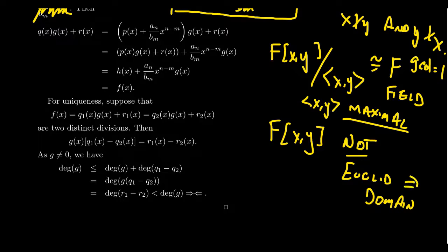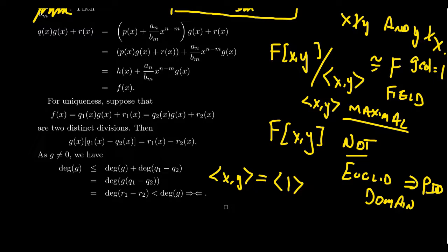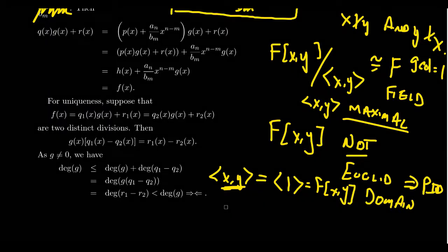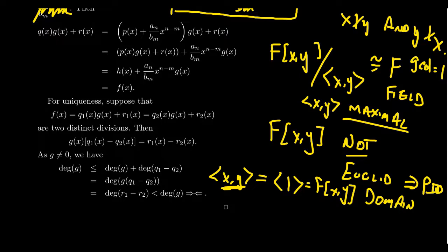If F[X, Y] were a Euclidean domain, it would have to be a principal ideal domain. Therefore, the ideal generated by X and Y would have to equal the principal ideal generated by their GCD, which is 1. But since 1 is a unit, the ideal generated by 1 is the whole ring — contradicting the fact that (X, Y) is a proper ideal. Therefore, in F[X, Y], GCDs are not necessarily linear combinations, so it is not a PID, and since every Euclidean domain is a PID, it is not a Euclidean domain.